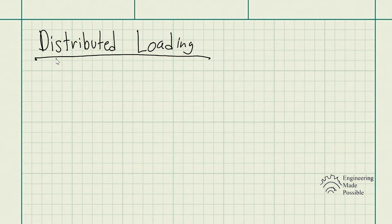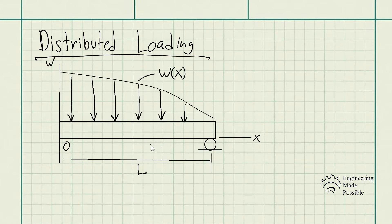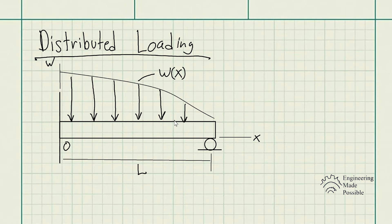Let's go ahead and draw an example out. We have this beam with the appropriate supports of dimension L. On the horizontal we have the X axis, and on the vertical let's call it the W axis. This here is a distributed load — a load that's placed across the entire surface of the beam. Let's call the loading function W with respect to X, so the force is going to be changing based off the function W of X.